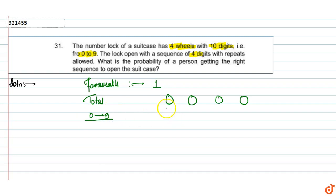So how many numbers are possible here? 0 to 9. If repeats are allowed, total 10 numbers can be: 0 can be, 1 can be, 2 can be. Here are 10 numbers, repeats allowed.